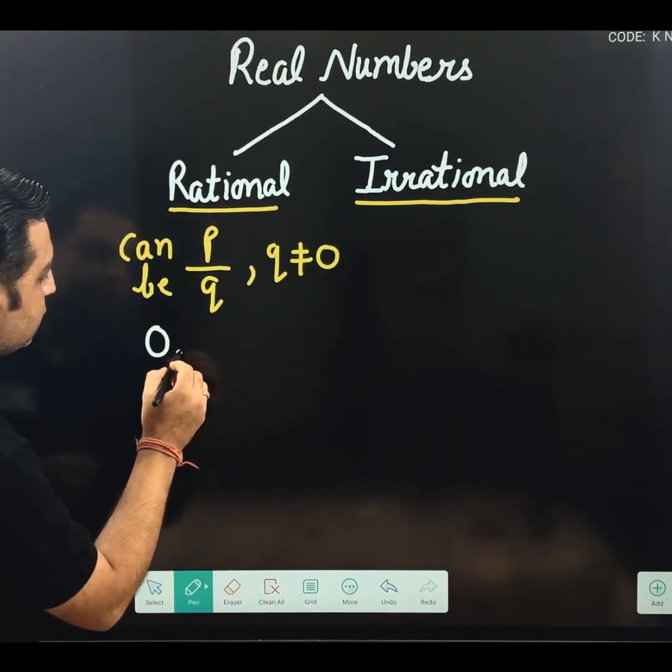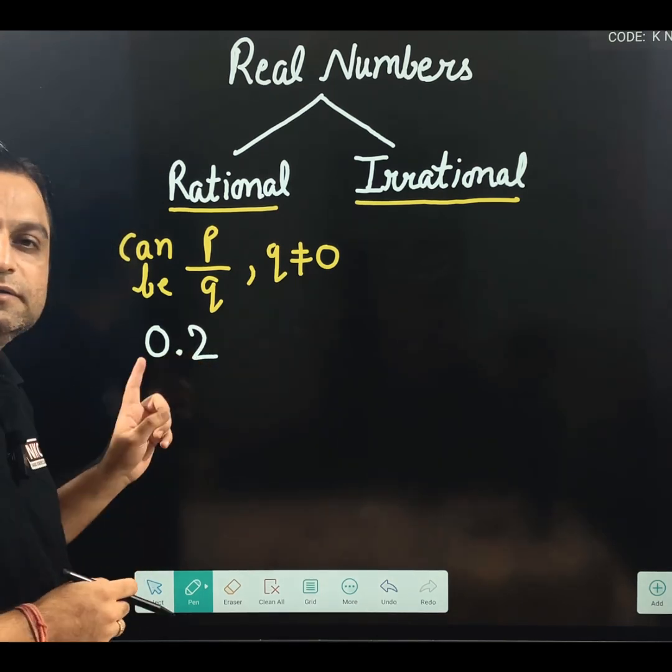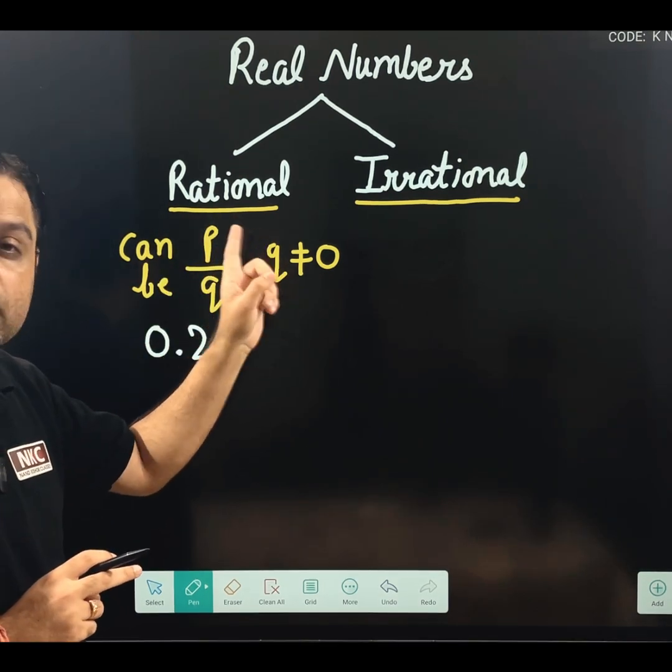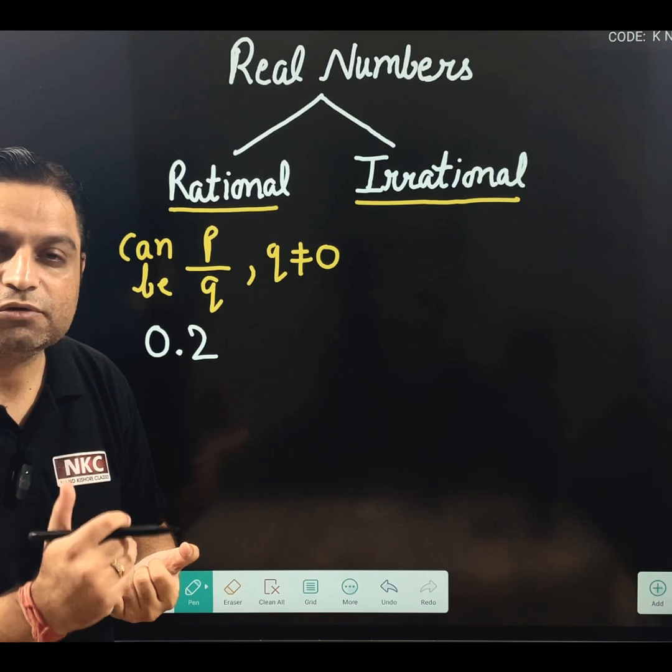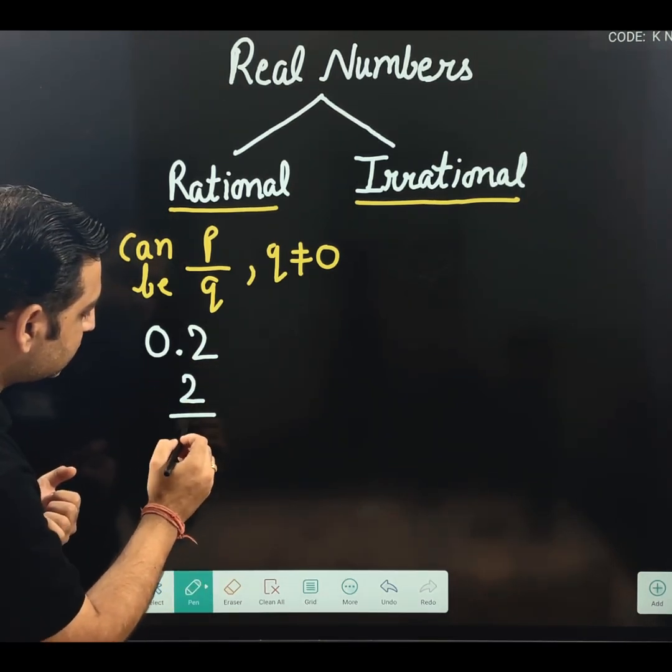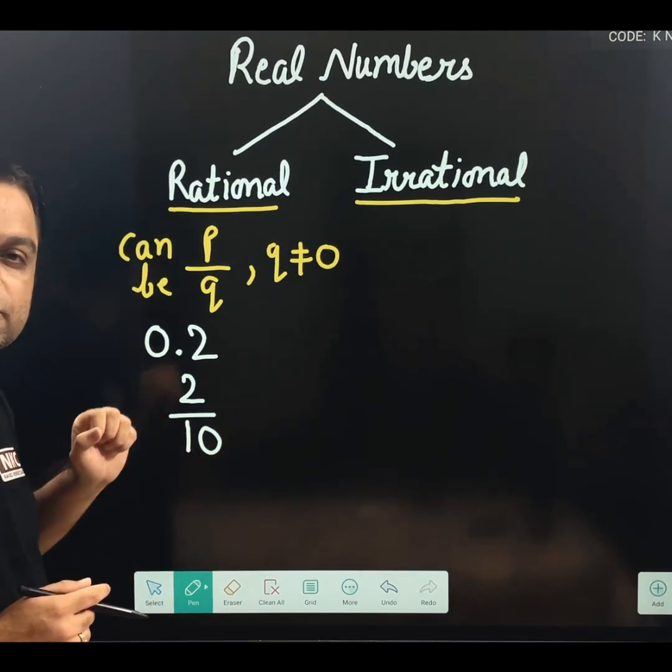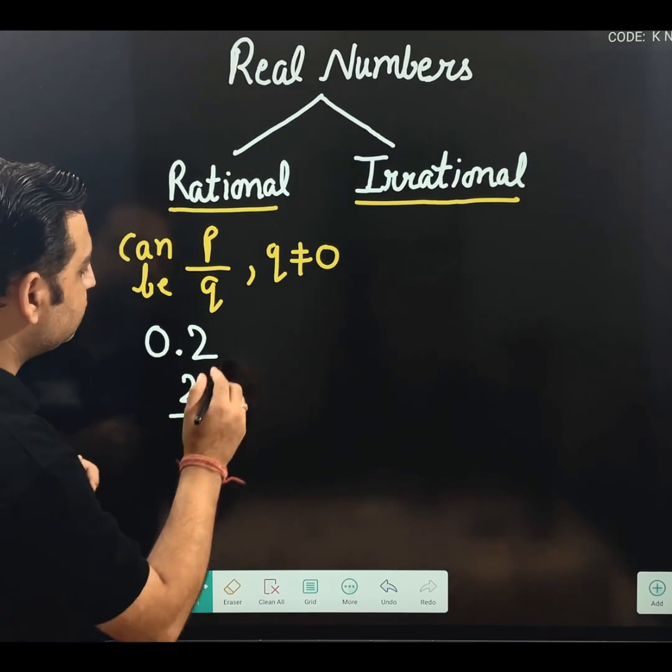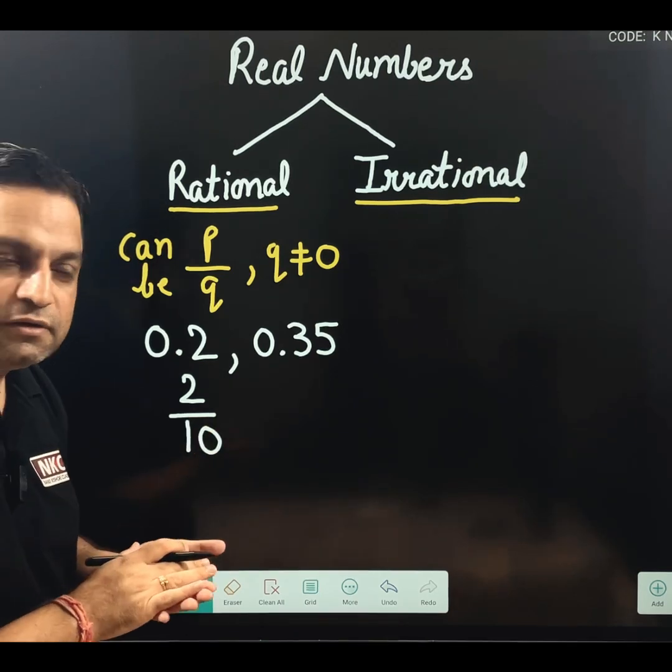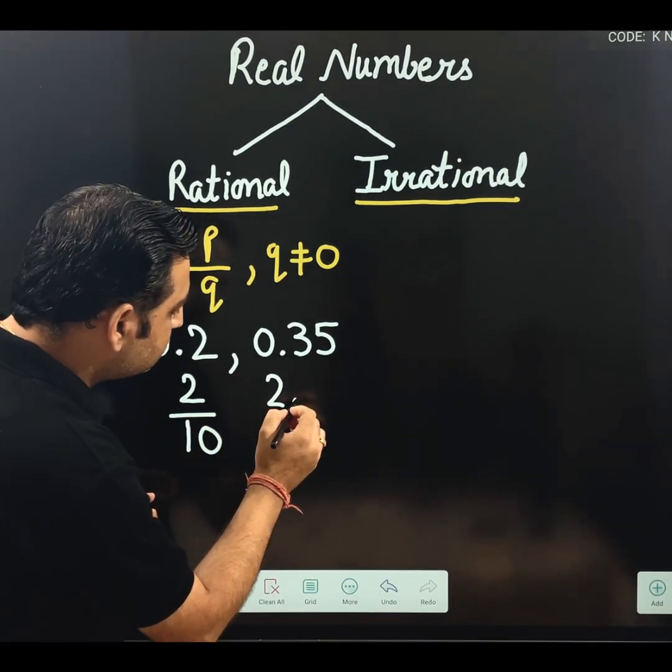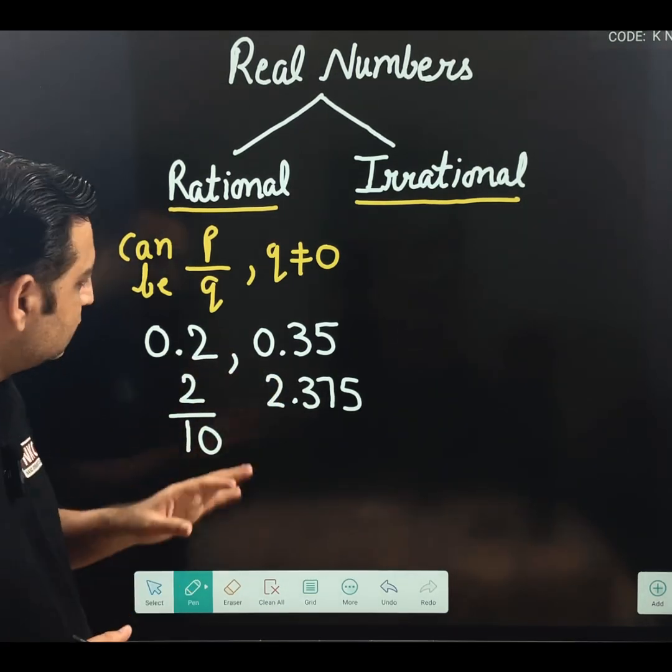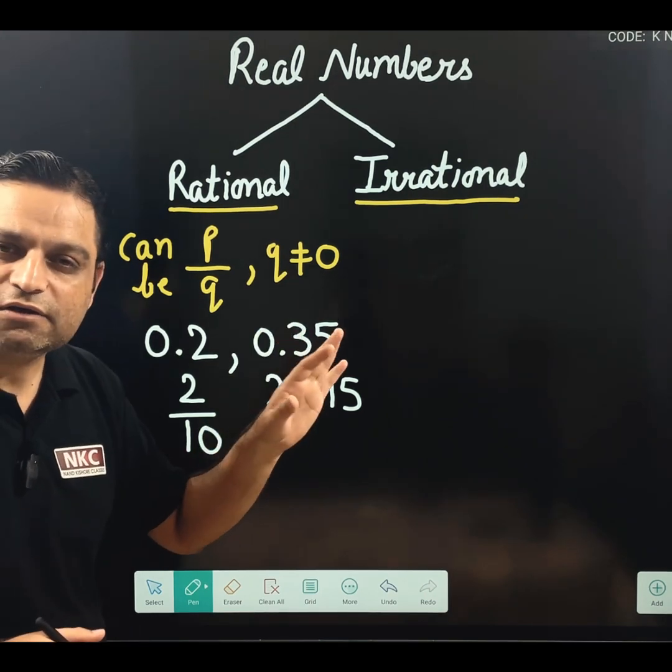For example, if I take decimal number 0.2, 0.2 is a rational number. It comes under rational. Why? Because it can be written as P upon Q form. You can remove the decimal and it can be written as 2 over 10. See, it becomes P over Q then. Similarly, any number which is in decimals like 0.35, this is also rational. 2.375, this is also rational. I hope you are able to understand that decimal numbers are rational numbers.